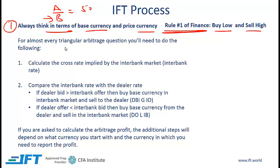For almost every triangular arbitrage question you will need to do the following: number one, you will have to calculate the cross rate implied by the interbank market, and number two, you need to compare this implied interbank rate with the dealer rate.